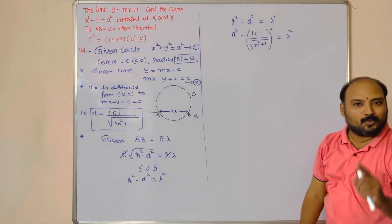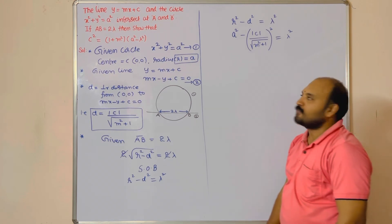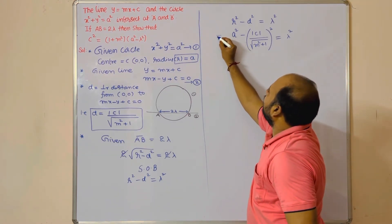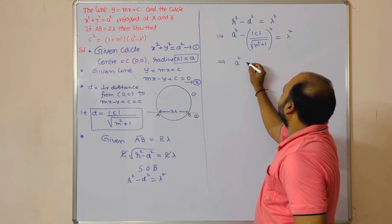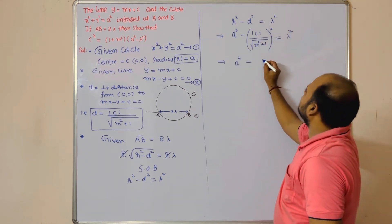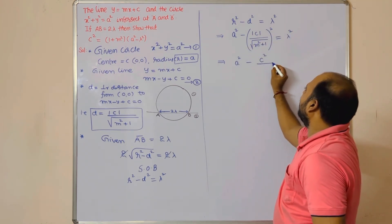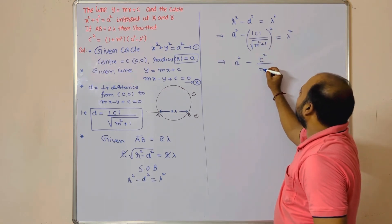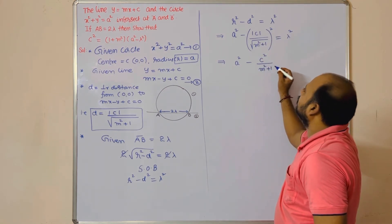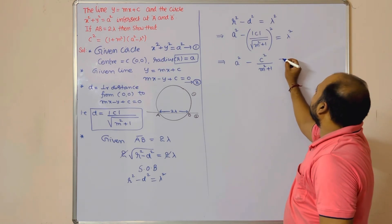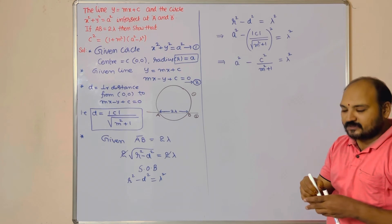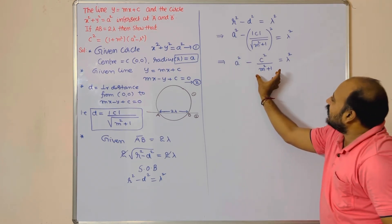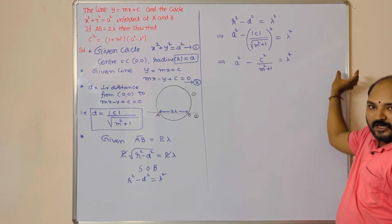I hope you understand the difference. So a² - c²/(m² + 1) = λ². Now what I am doing is -c²/(m² + 1), I am taking to this side, and λ² I am taking to this side.